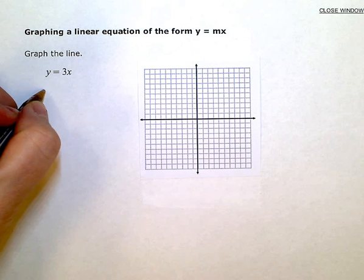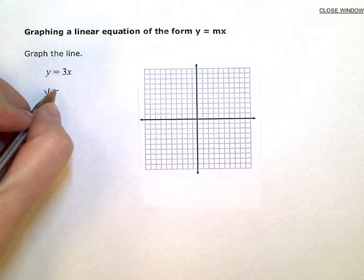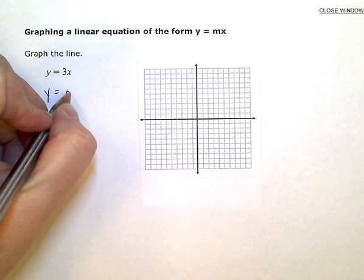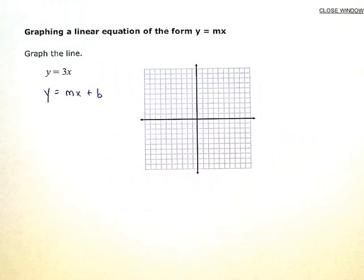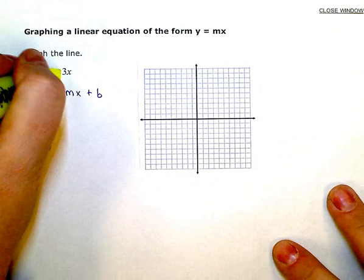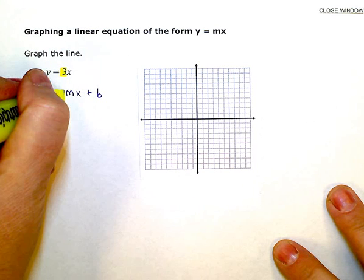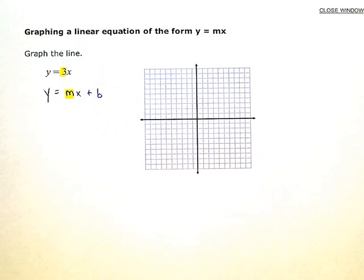If you think about slope-intercept form of a line, y equals mx plus b. The 3 in this equation is next to the x, or the variable. So it's my slope, the m in this mx term.